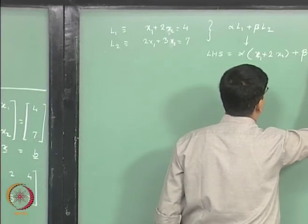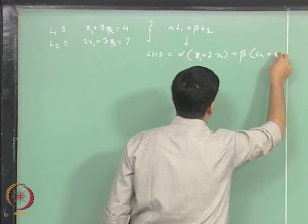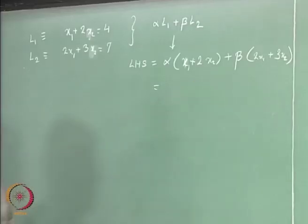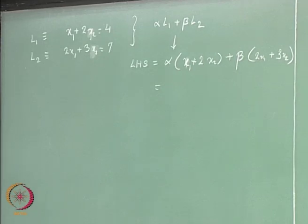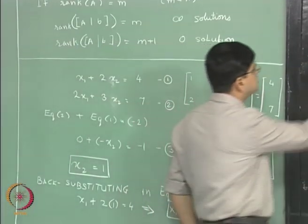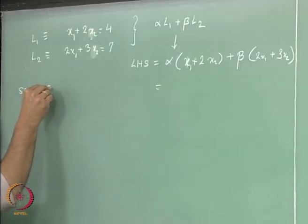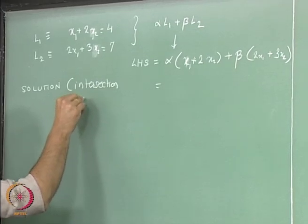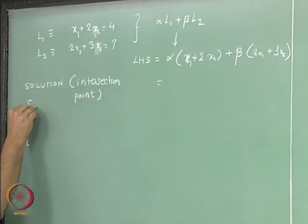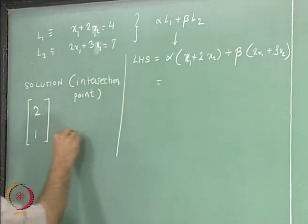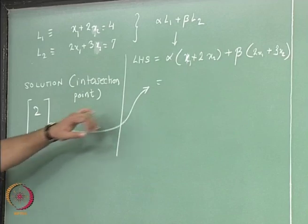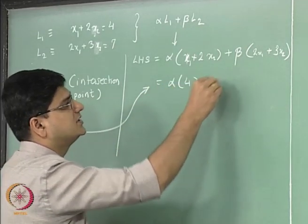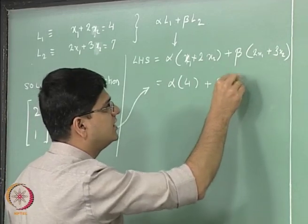It is going to be equal to alpha multiplied by x1 plus 2x2 plus beta multiplied by 2x1 plus 3x2, which equals alpha L1 plus beta L2 on the left hand side. Let us substitute this particular value in this equation.